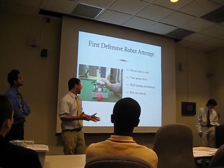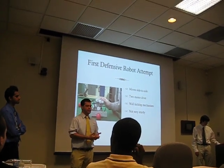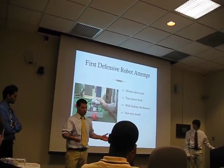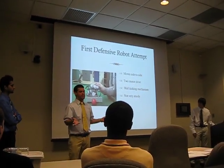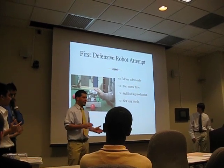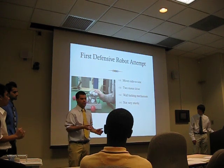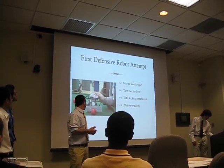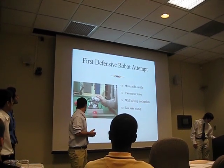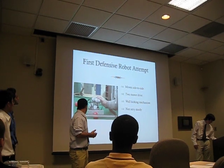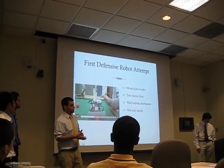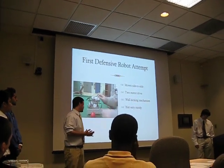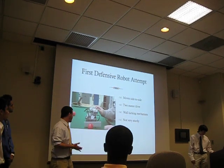The first defensive robot had two motors to control the steering, and a kicking mechanism that was basically a large wall spanning the maximum dimensions allowed for the defensive robot. A motor behind it pushed it forward and back when the ball was pressed. As you can see, it was not a very strong design for the kicking mechanism — it wasn't very sturdy and didn't have much power at all. So we scrapped that.